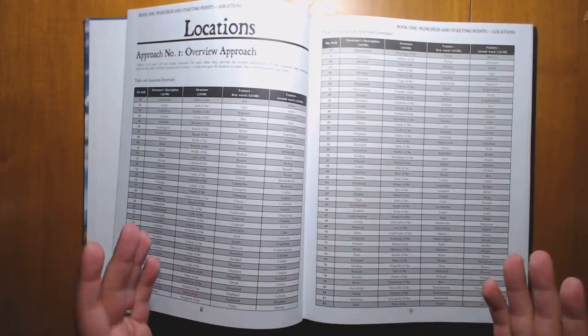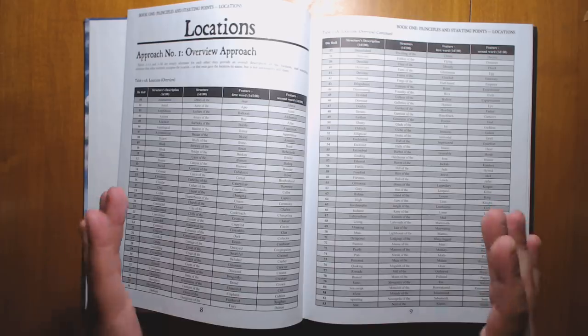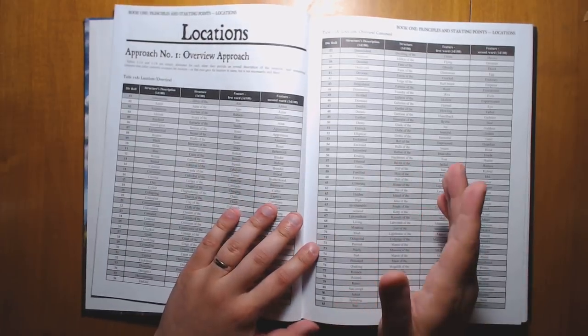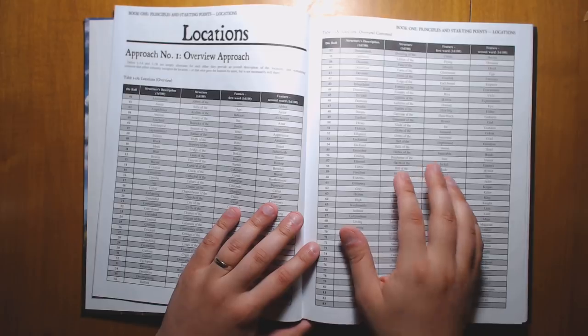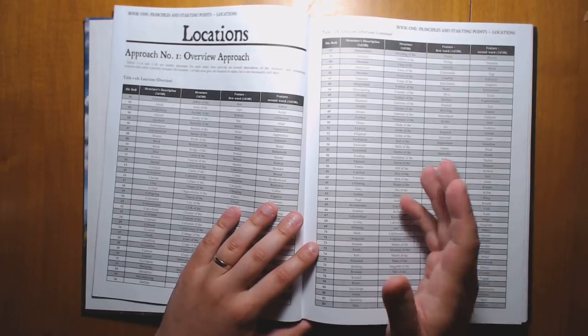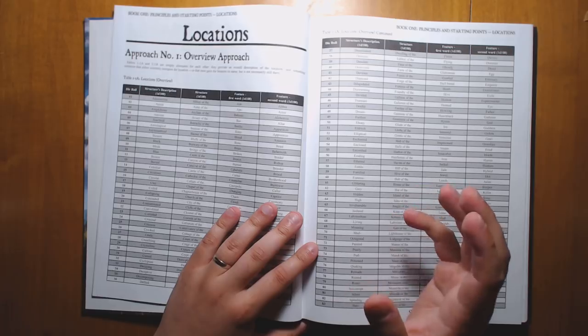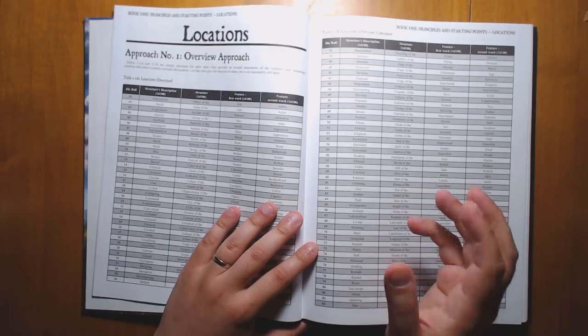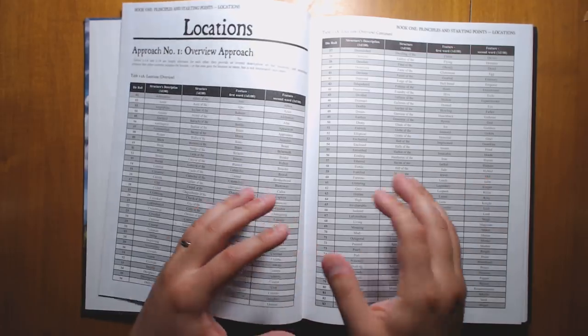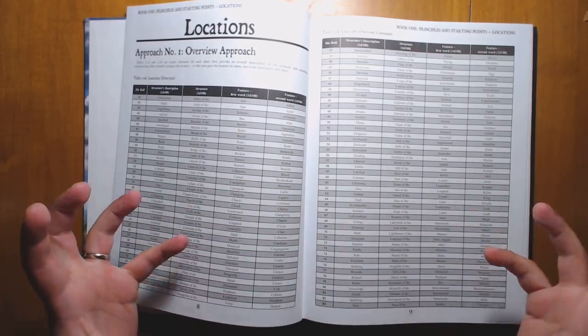Starting with locations. This entire book is random tables. If you enjoyed my game Maze Rats, then you will really like this. This isn't a game, of course, it's just a set of resources. But like Maze Rats, it is a toolkit that gives you enormous amounts of gameable material. And it has all of the different pieces for you to put together.